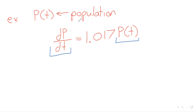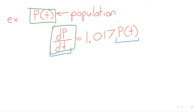So this is an example of a differential equation. You've got this unknown function p of t, you've got the derivative of that function, and a relationship between the derivative and the unknown function. This is a pretty elementary example, but an example nevertheless of a differential equation.